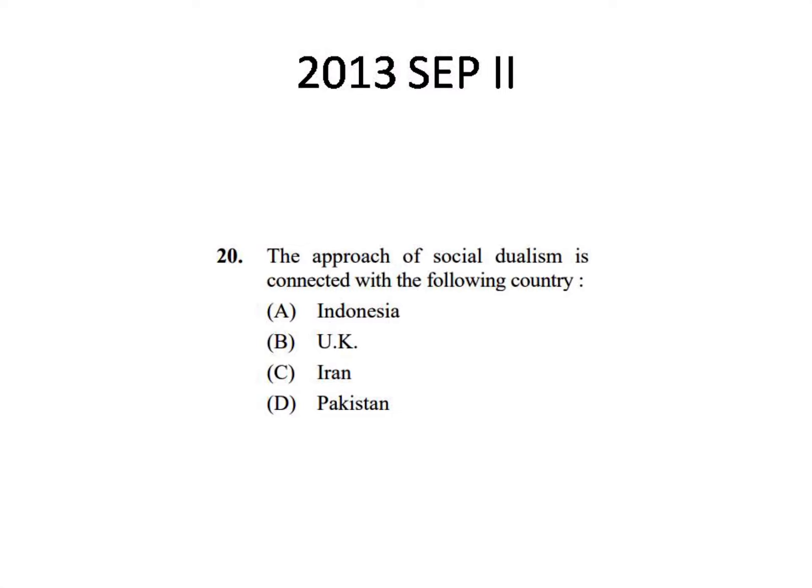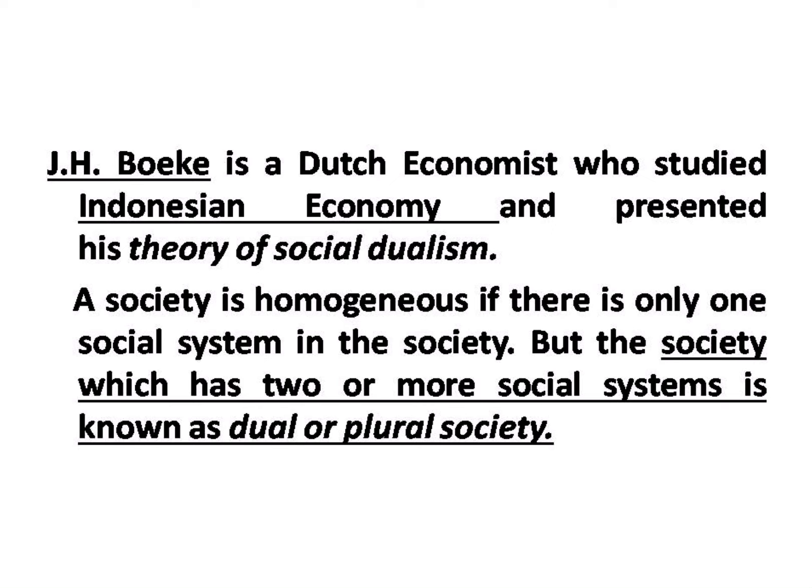This question was asked in 2013, September, Paper 2. The question is: the approach of social dualism is connected with which of the following country? Social dualism is a study specifically done in Indonesia, where two things were studied: Western society and Eastern society. This model was given by J.H. Boeke, who was a Dutch economist who studied the Indonesian economy and presented the theory of social dualism. Society is homogenous if only one social system exists, but if two or more social systems exist, it is called a dual or plural society.